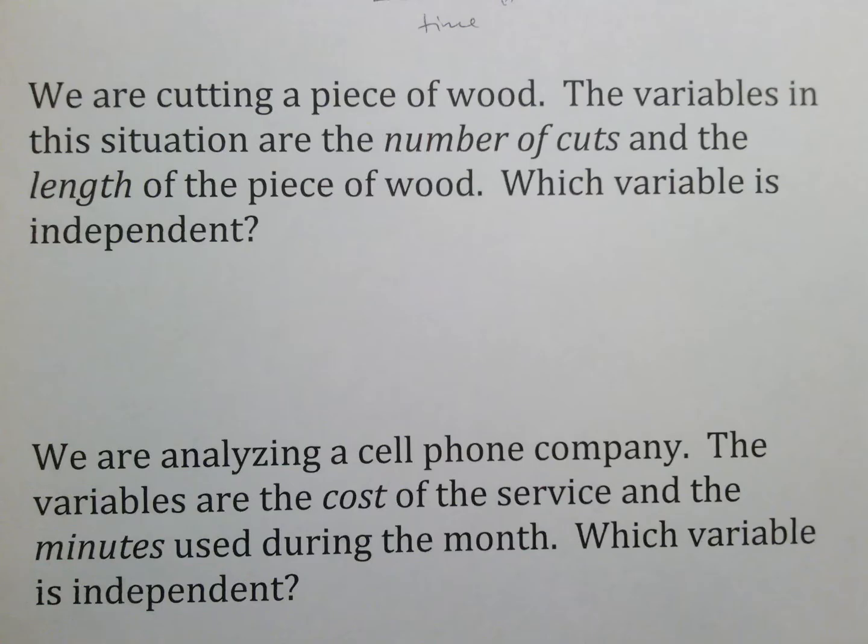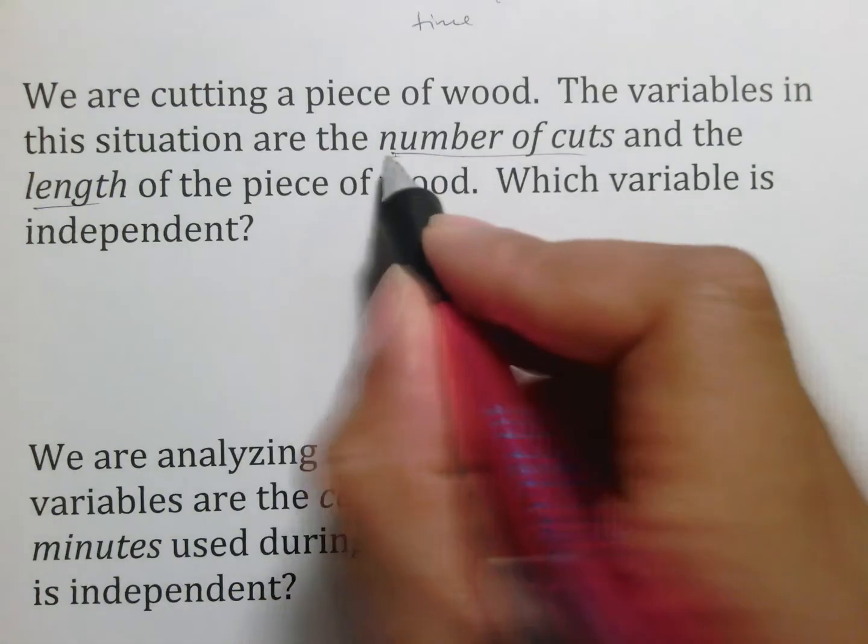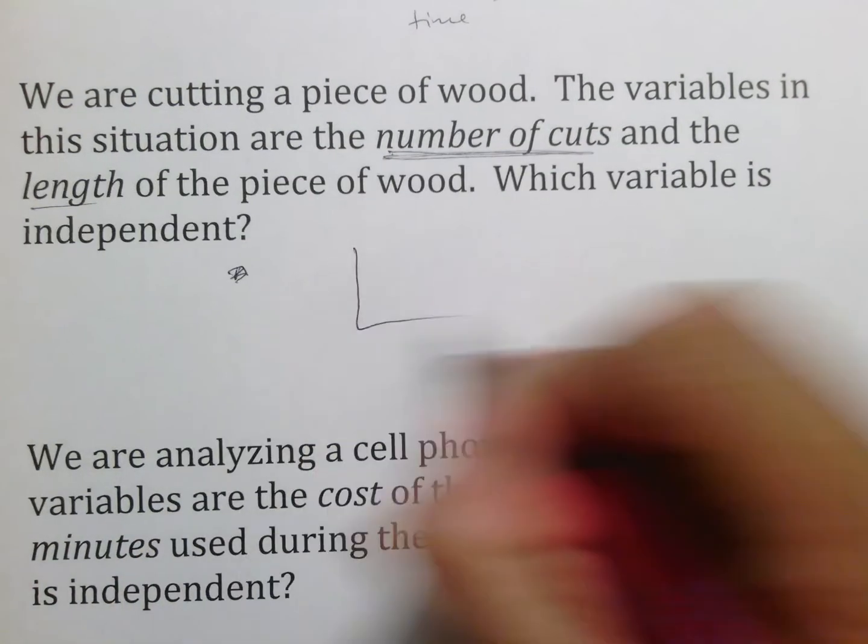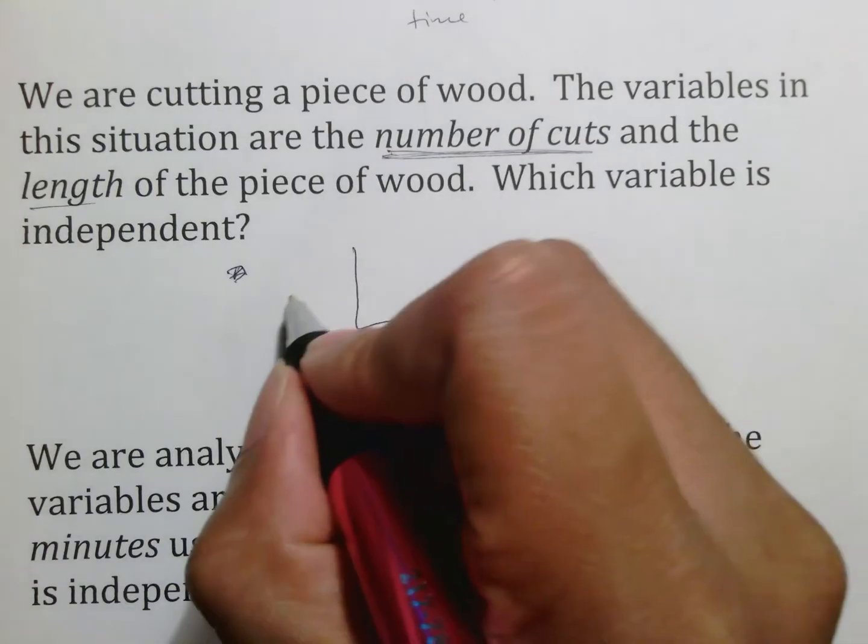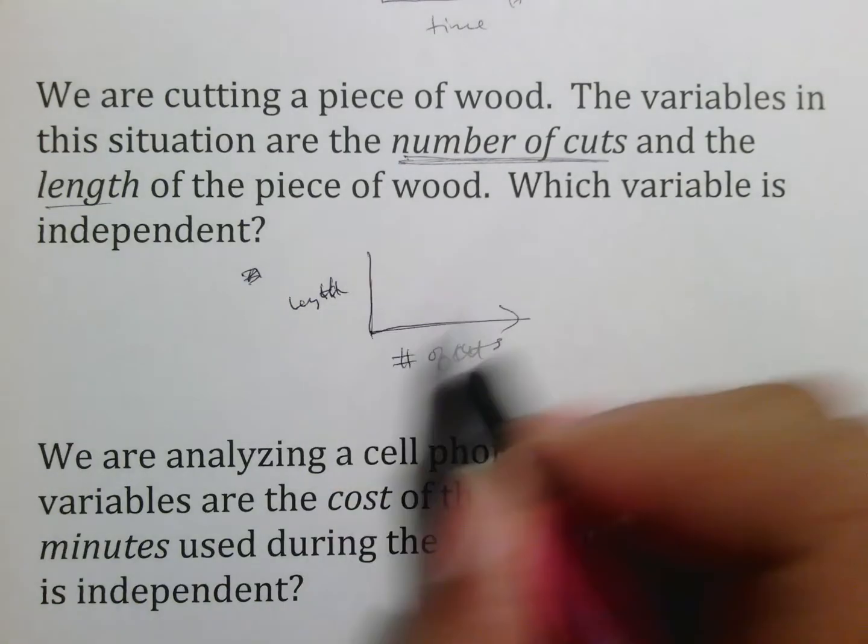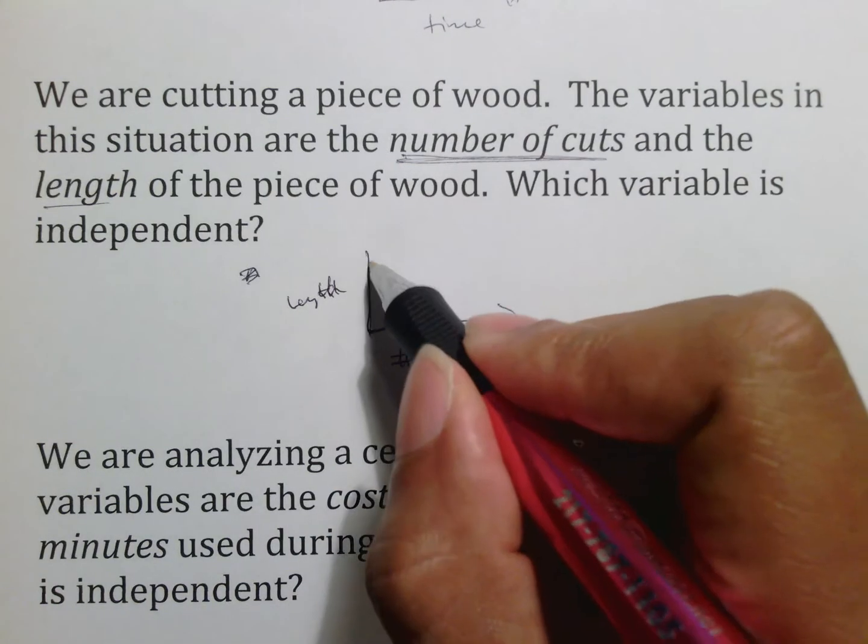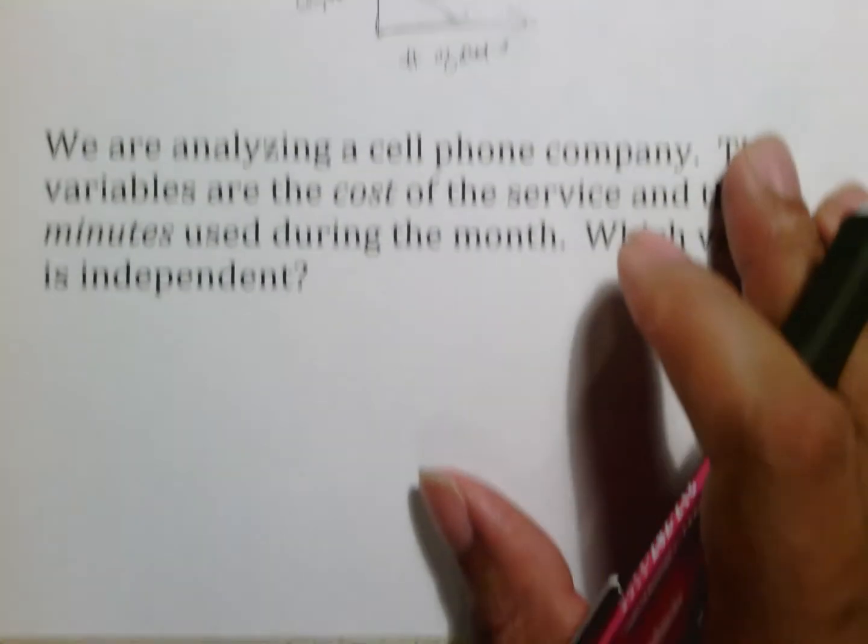You're cutting a piece of wood. Variables in the situation are the number of cuts and the length of the piece of wood, which variable is independent. If you're talking about a variable that controls everything that continues to go forward, that initiates the action, I would believe that the number of cuts would be your independent variable. And so if you were going to do this, I would put number of cuts here and length here. So number of cuts would be what would run the graph. And then as you do more cuts, as you have no cuts, the length of the wood should be here. As you make more cuts, the length of the wood should go down.